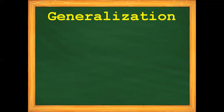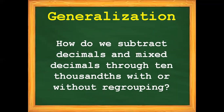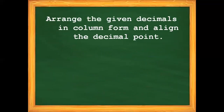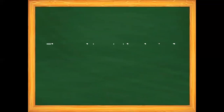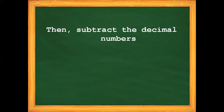Always remember how to subtract decimals and mixed decimals through 10,000 with or without regrouping. First, arrange the given decimals in column form and align the decimal point. Second, insert zeros in empty decimal place values if necessary so that all the numbers have the same number of decimal places. And last, subtract the decimal numbers.